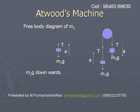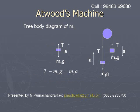In the free body diagram of m1, m1g acts in the downward direction and T acts in the upward direction. Since T is more than m1g, the acceleration is in the upward direction. So we write the equation of motion of m1 as T − m1g = m1a. Like this, we have to understand writing the equations of motion using free body diagrams.